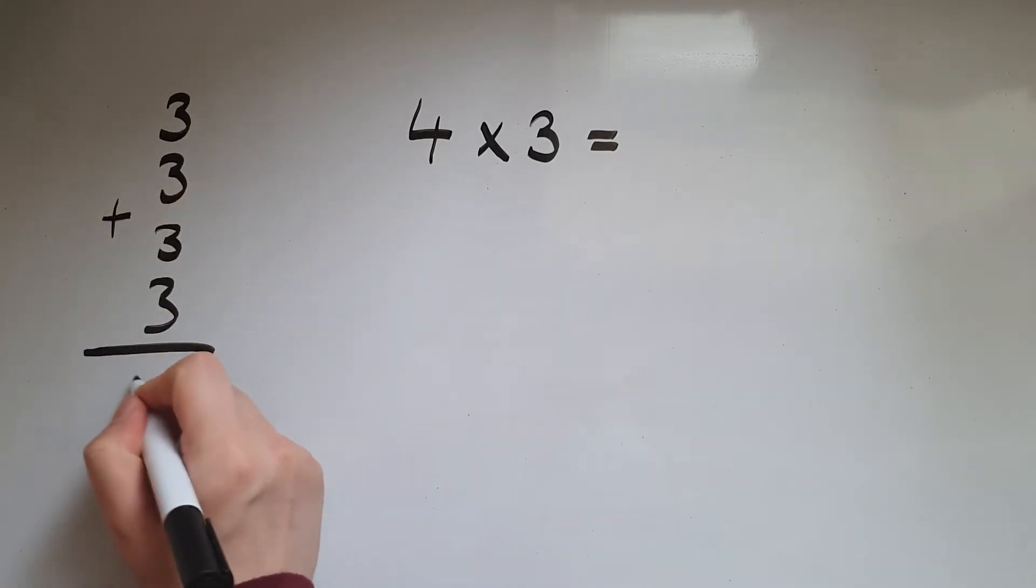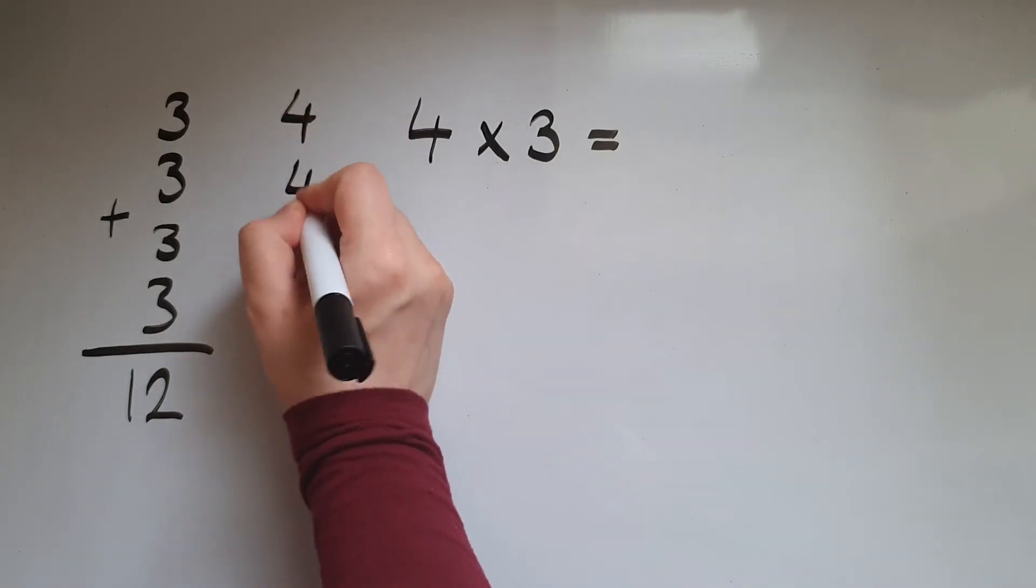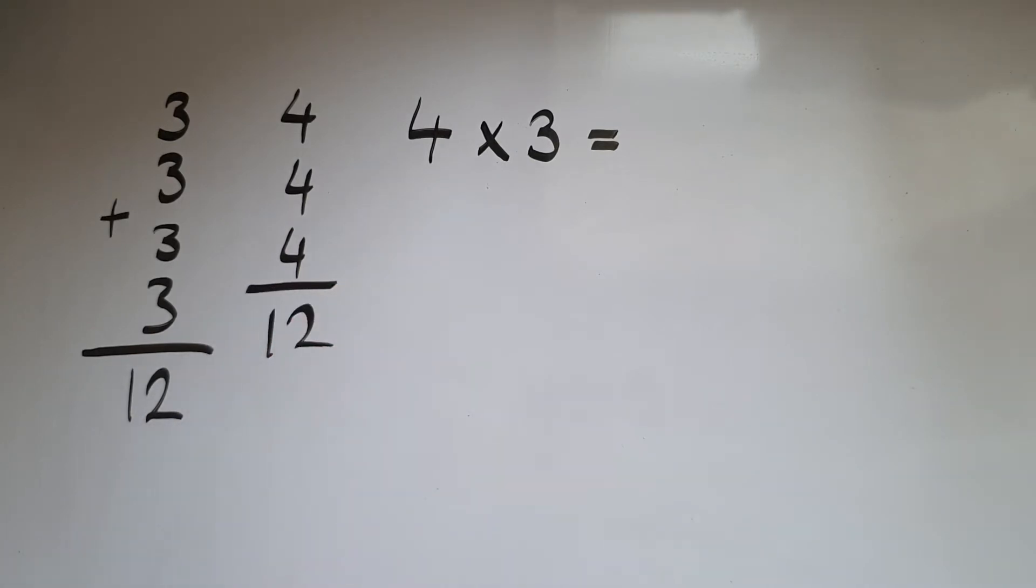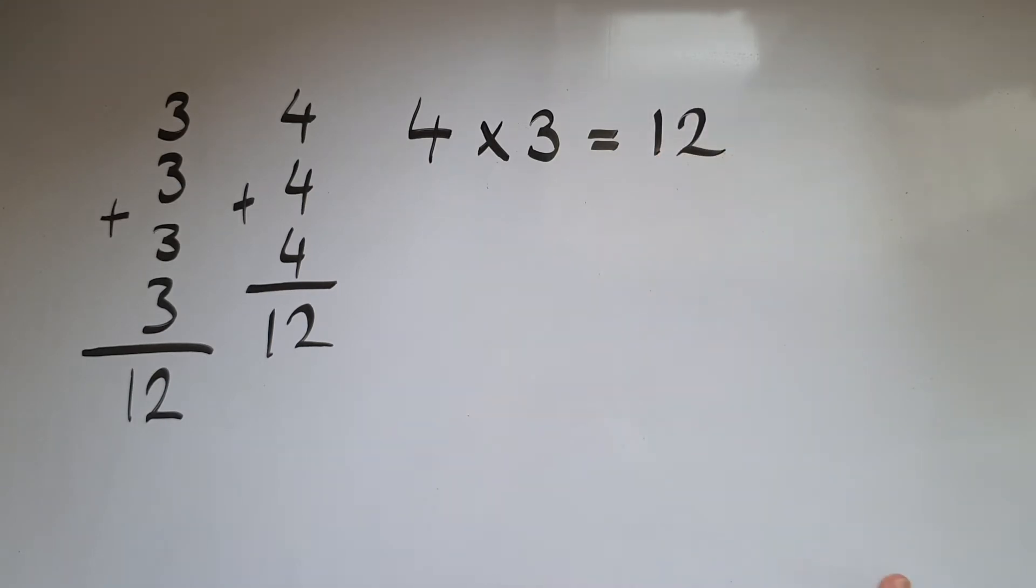If you add them together gives you 12. It also means three lots of four, so four and four and four gives us 12 again. So four times three is equal to 12.